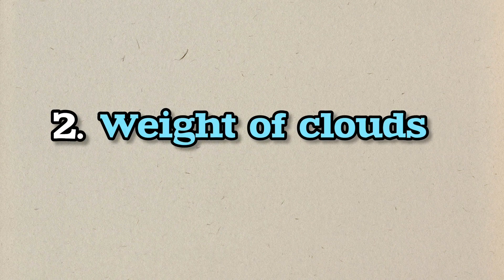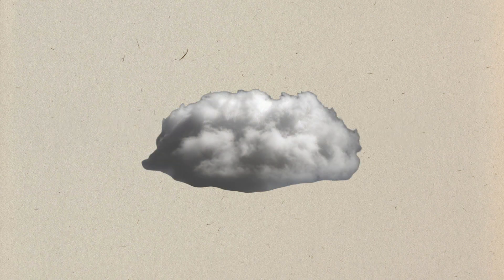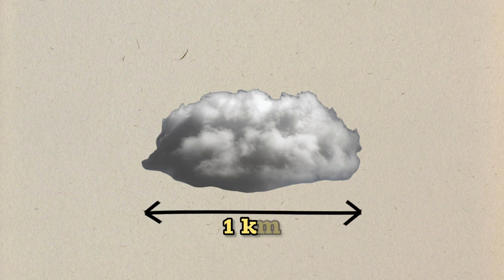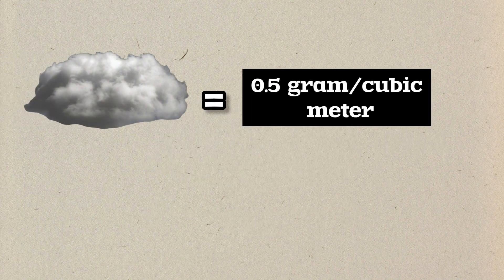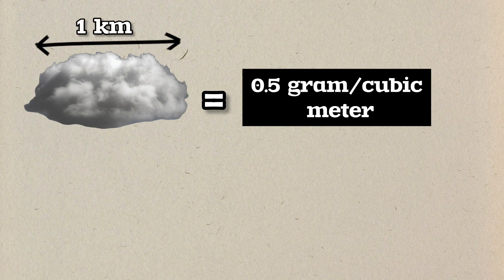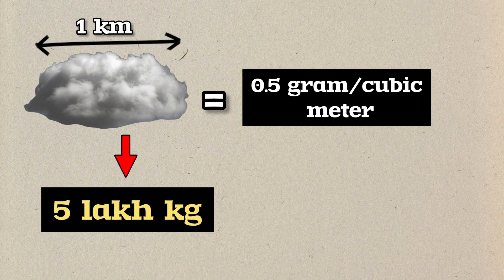Second, the weight of clouds. To determine the weight of a cloud, let's consider a cumulus cloud with dimensions of 1 cubic kilometer, equal in height and length. Normally, a cloud has a density of 0.5 grams per cubic meter. So the weight of a 1 cubic kilometer cloud will be 5 lakh kilograms.